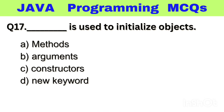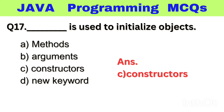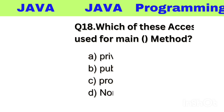Question number 17. Dash is used to initialize objects. Option A: Method, B: Arguments, C: Constructors, D: New Keyword. The right answer is option C, Constructors.